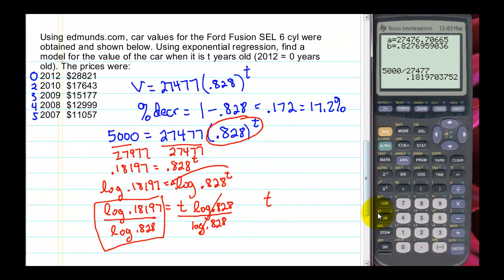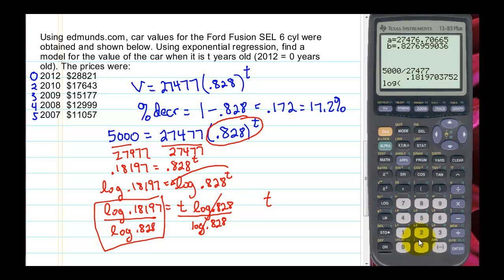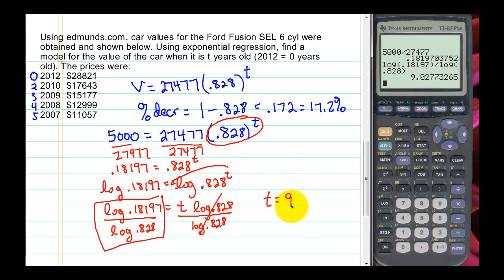So now we can make this calculation in our calculator to get the value of t. So if we do that, we have now the log of 0.18197. Close that parentheses. Divide by log of 0.828, our growth or decay factor. And we get approximately 9 years. So in about 9 years, our car's value will be $5,000.